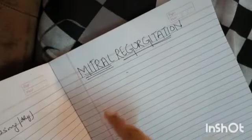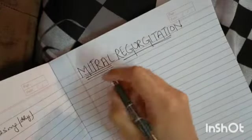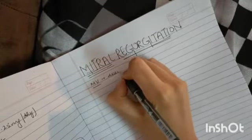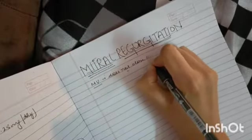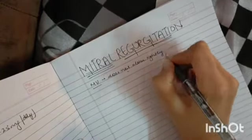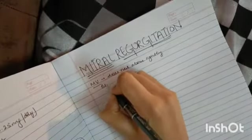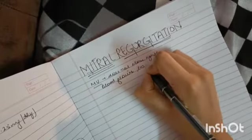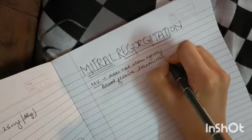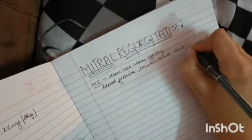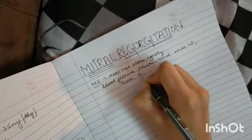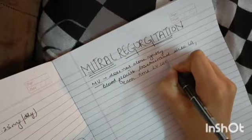In this video we will discuss mitral regurgitation. It is basically a condition in which the mitral valve does not close tightly, due to which blood flows backward into the left atrium each time the left ventricle contracts.